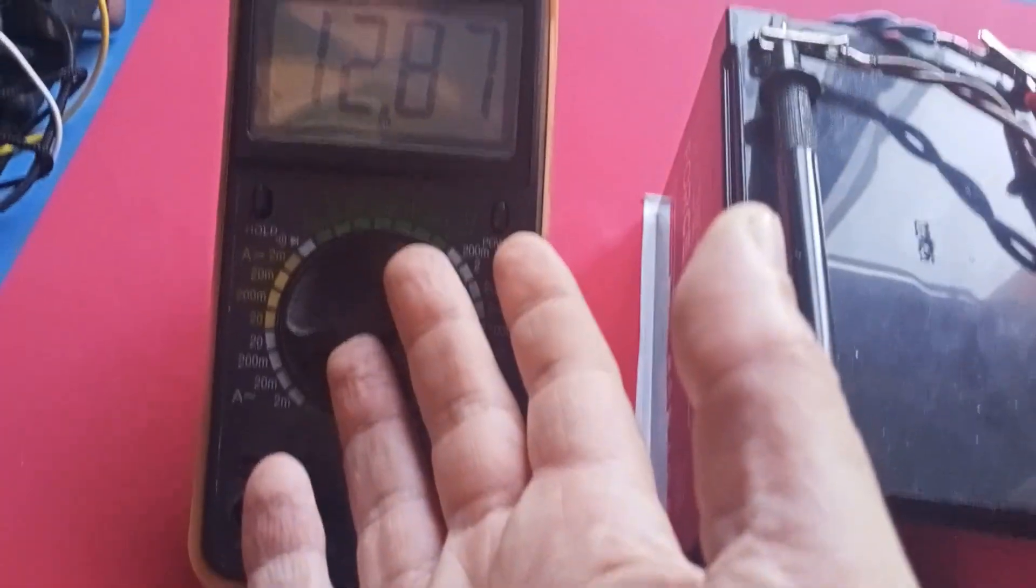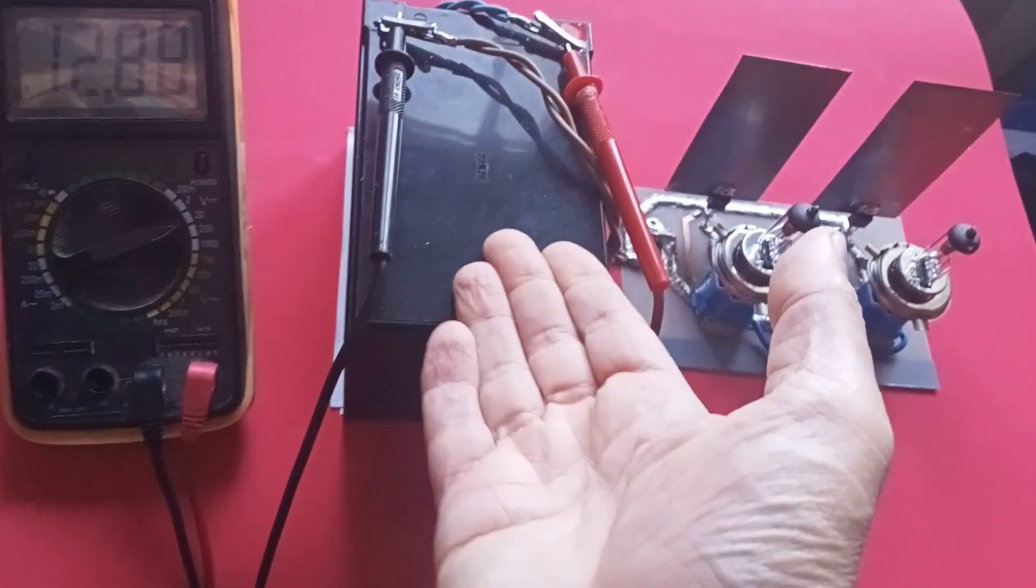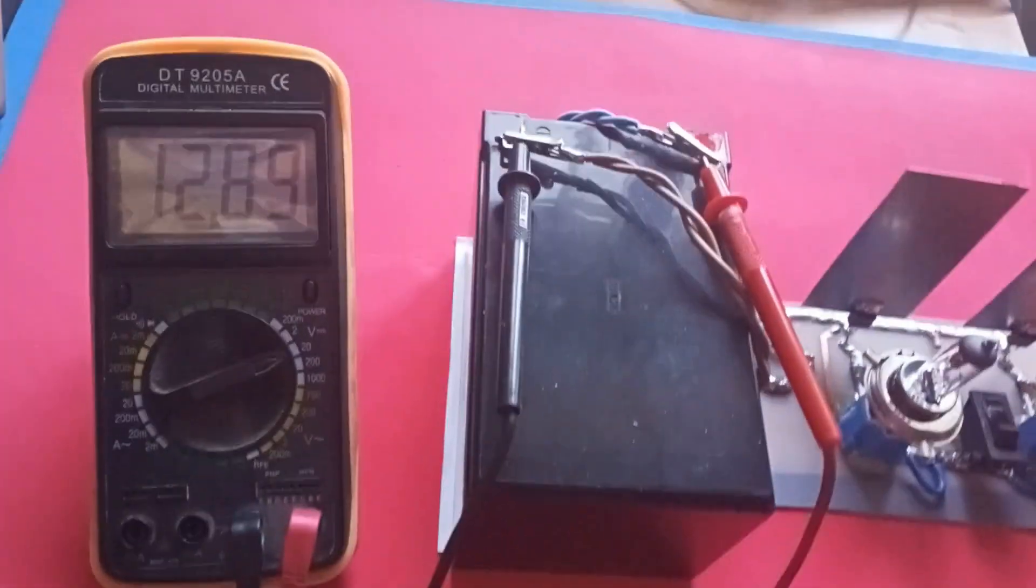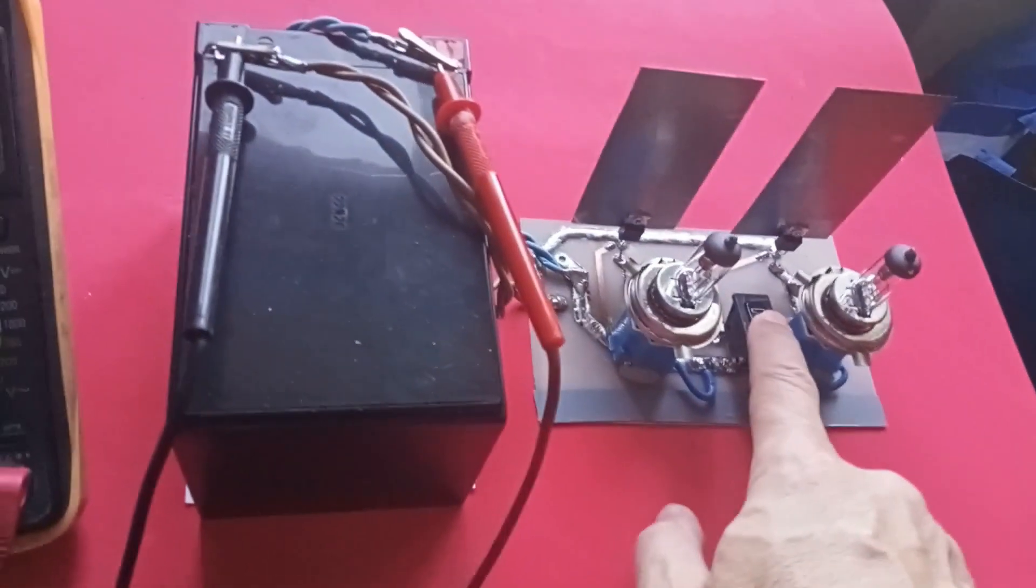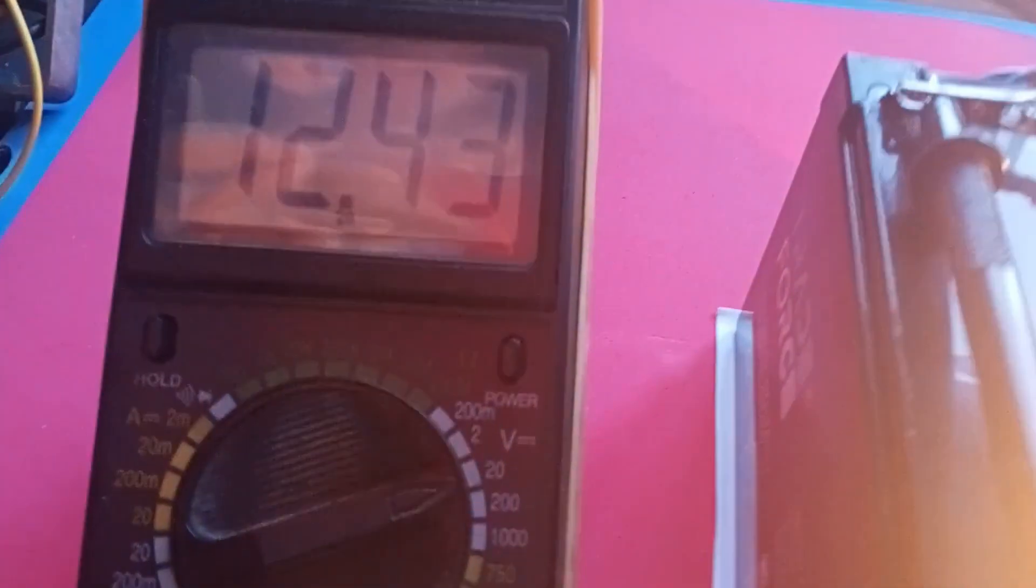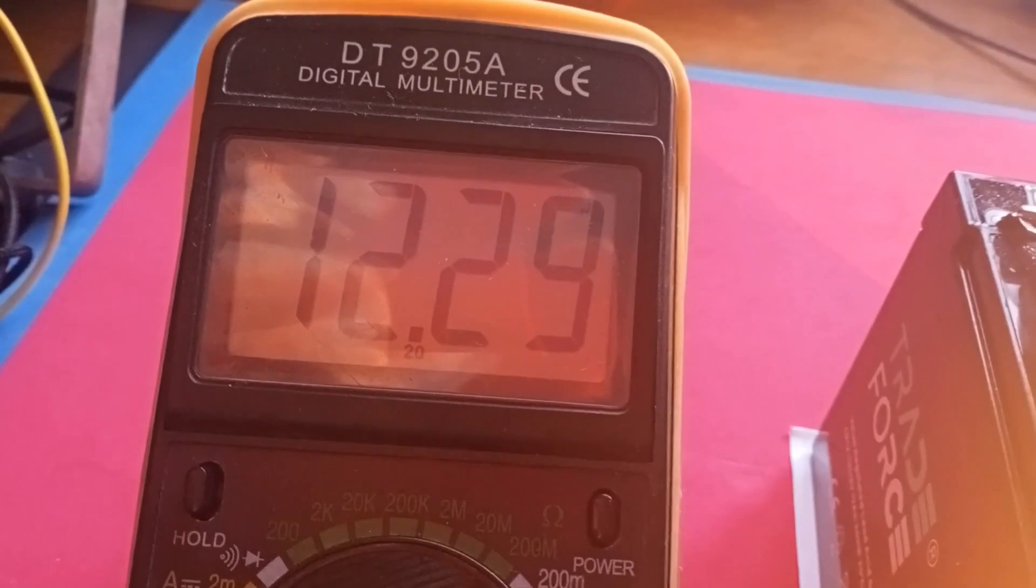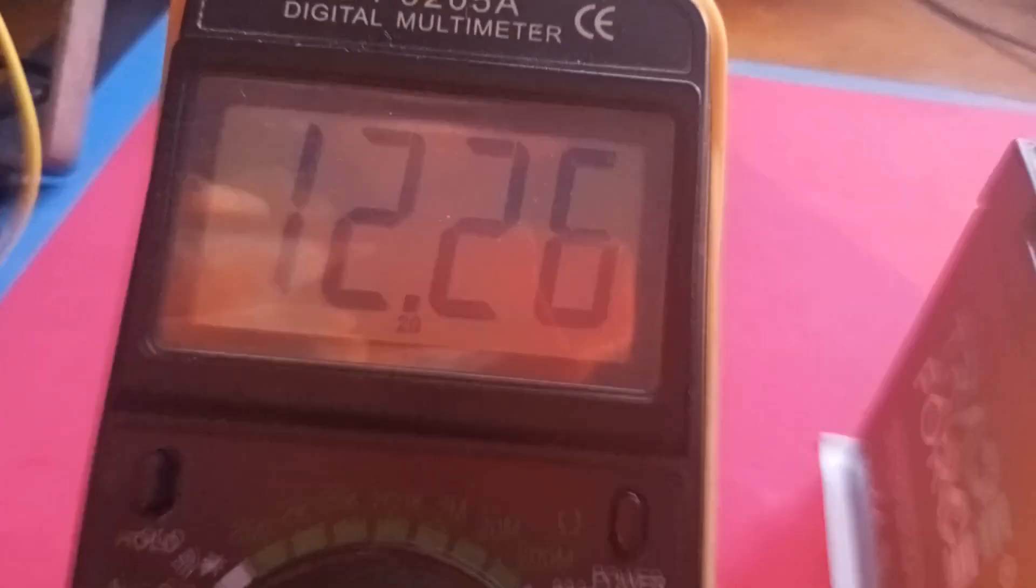The first quick test is to observe a significant drop in battery voltage. This occurs because every battery has internal resistance, and when a high load is applied the current increases, reducing the available voltage at the battery terminals. For this reason it is always recommended to use a higher capacity battery.